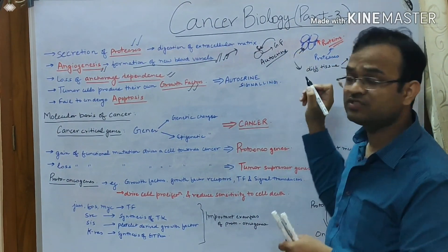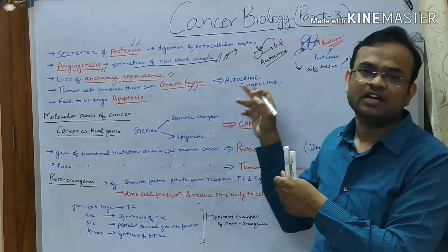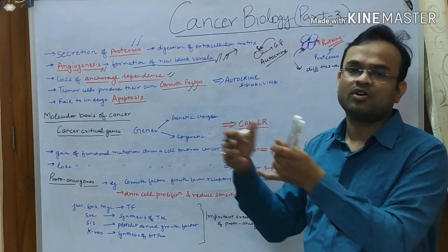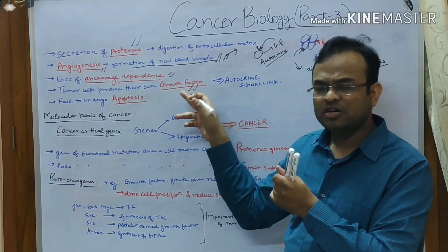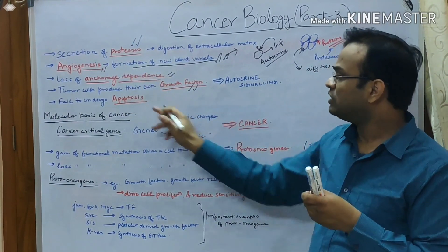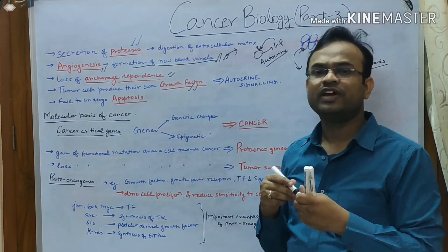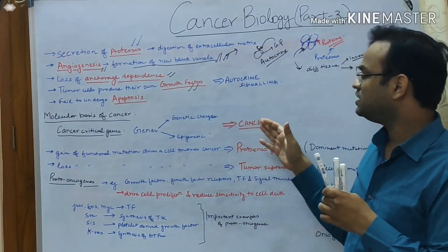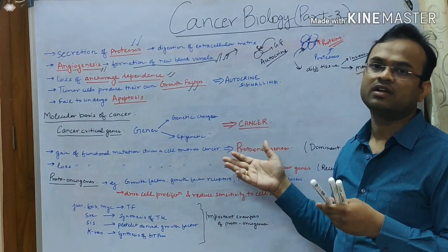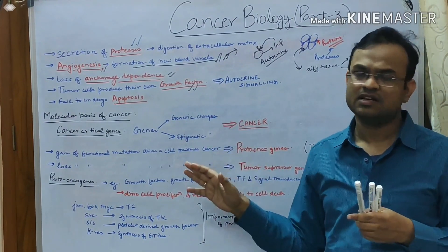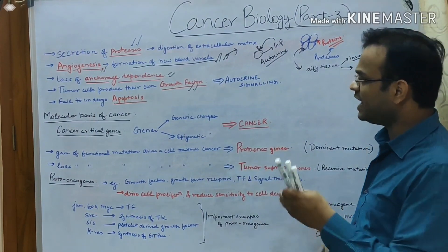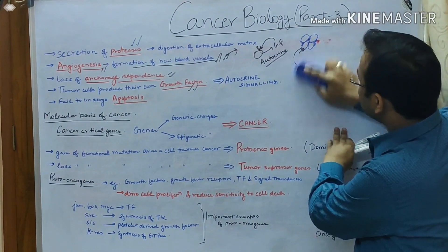Autocrine signaling is where a particular cell produces a chemical signal and that signal targets the same cell that produced it, causing it to proliferate. These growth factors are also responsible for angiogenesis. Lastly, cancer cells fail to undergo apoptosis — cancer cells are very resistant to apoptosis, they do not die, they are immortal. We discussed immortalization in the last lecture.